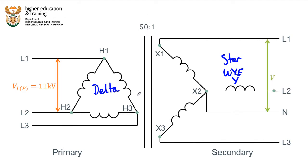They ask us to find the single phase voltage being delivered to customers — in other words, the voltage between any of the lines and neutral. That is the same as the phase voltage on the secondary side of this three-phase system.